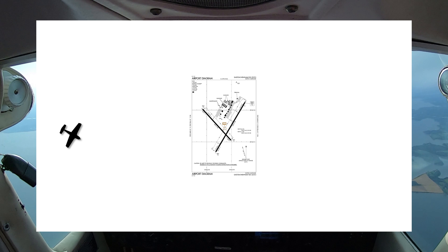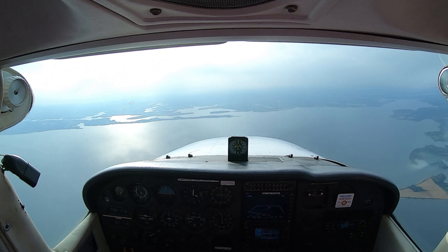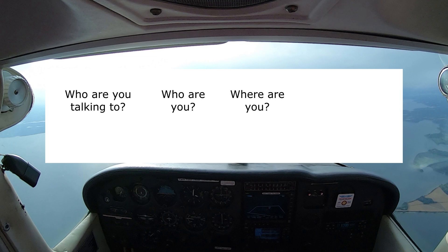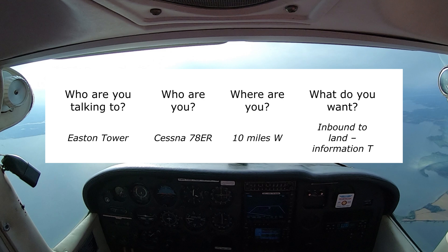Our descent shouldn't be too complicated — it's a short drop from 3,000 feet to pattern altitude. So we're ready to make our first call, organized as: who are you talking to, who are you, where are you, and what do you want? With this information organized, we can practice our initial radio call a few times in our head before keying the mic.